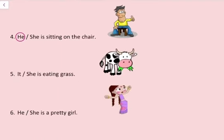Number 5. It, she is eating grass. Grass kha raha hai, cow ke liye hum it use karate hai. It is eating grass.